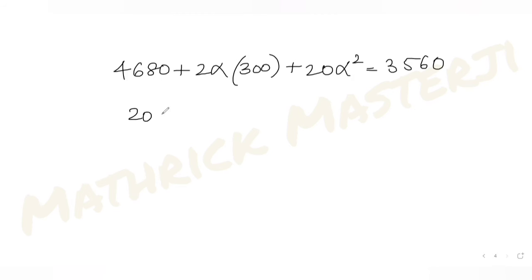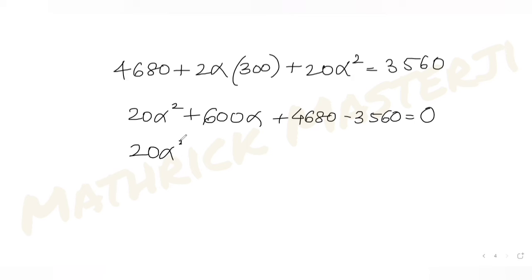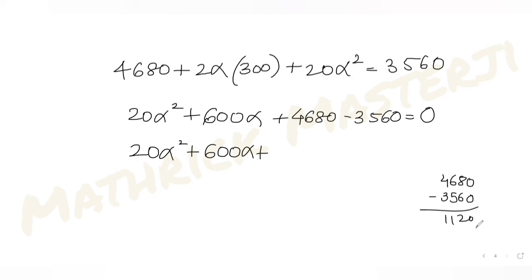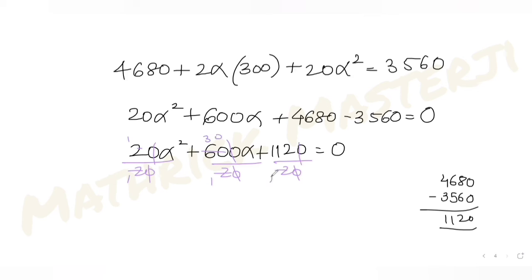Rearranging: 20α² + 600α + (4680 − 3560) = 0, which is 20α² + 600α + 1120 = 0. Dividing throughout by 20 gives: α² + 30α + 56 = 0.